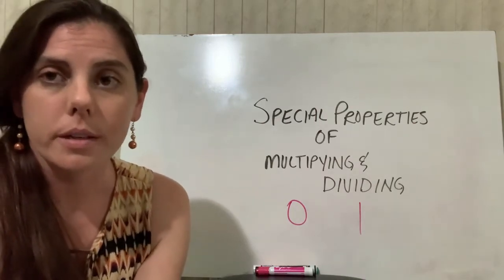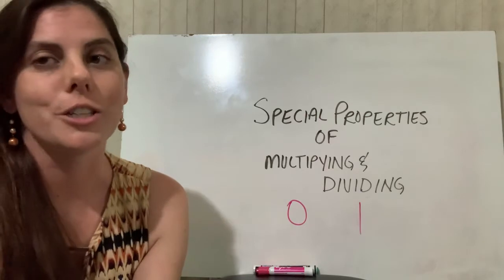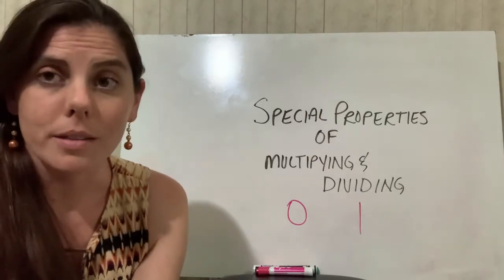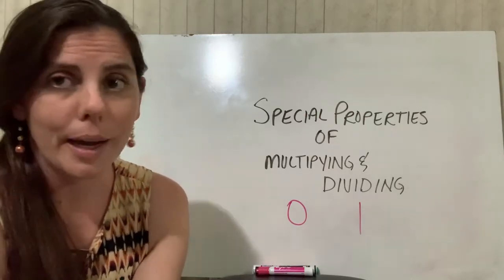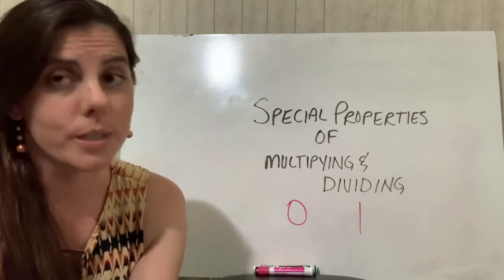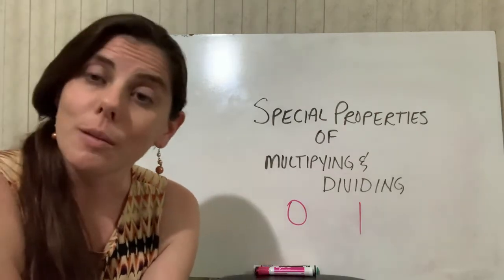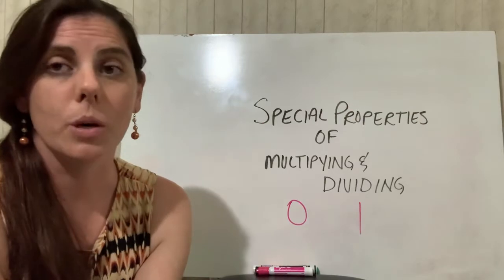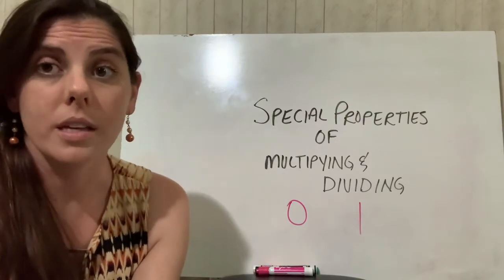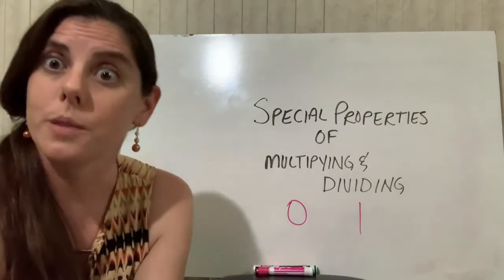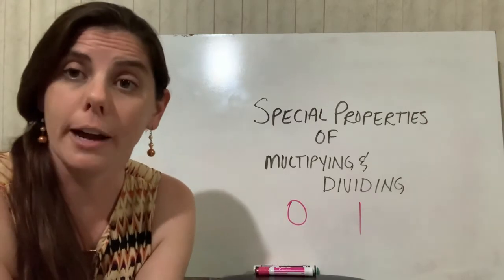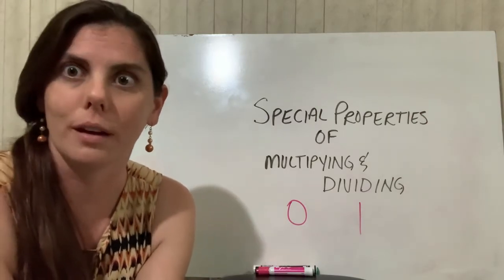So 0 is a special number in multiplication and division because if you multiply anything by 0, it just equals 0. So basically what you're saying is if I have 34 groups of 0, how much do I have? If I have 34 groups of nothing, then I still have nothing.